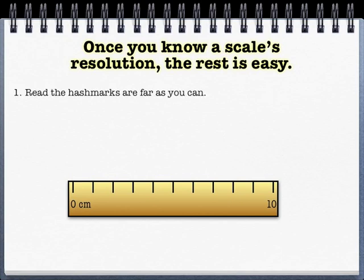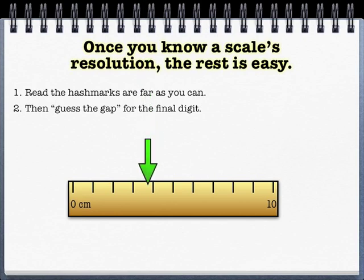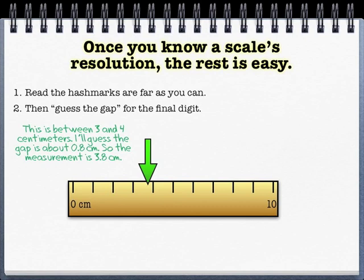So once you have the resolution, it's a piece of cake. You simply read the hash marks as far as you can go. No one's going to argue with that, but then you have to guess the gap. And that's where there's going to be a little bit of artistic license. You want to make sure that you try to guess the gap correctly. A common mistake is for people to always just guess the gap as a 5 or a 0, and that's statistically unlikely 100% of the time. So in this case, it's between 3 and 4, so I would guess that gap is about 0.8, so 3.8 centimeters.